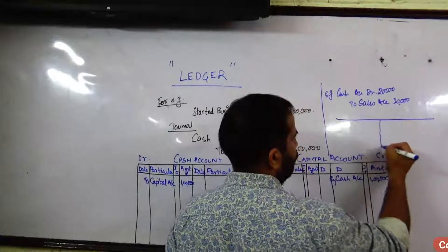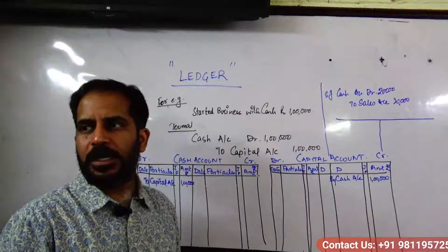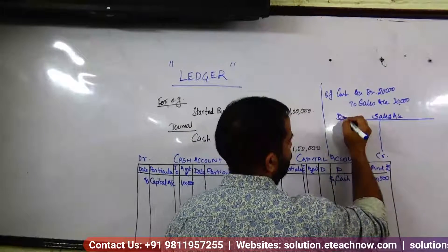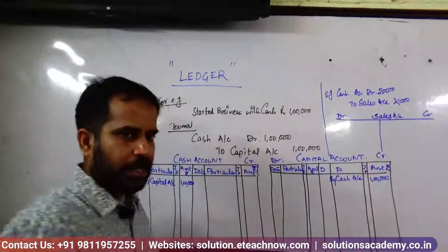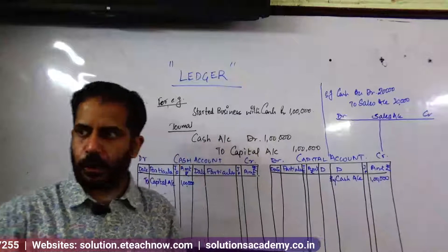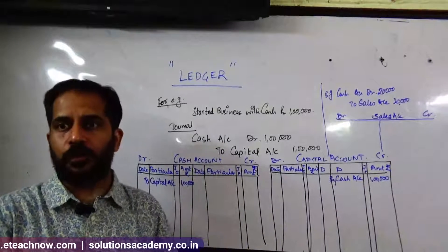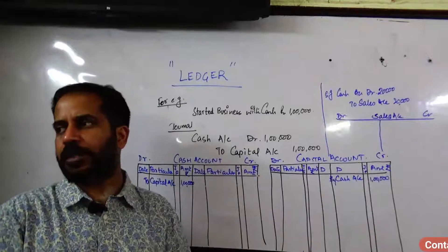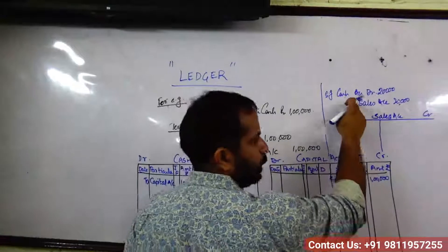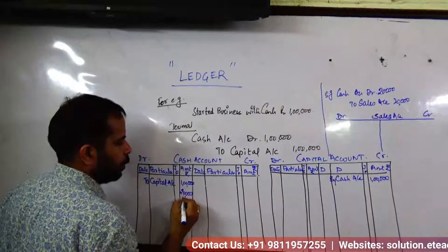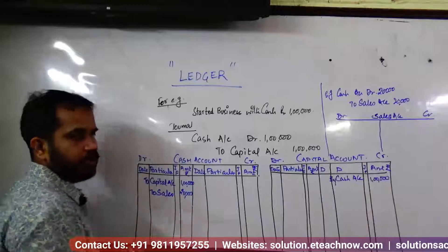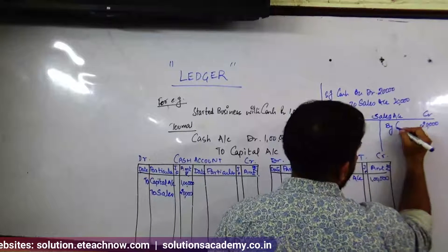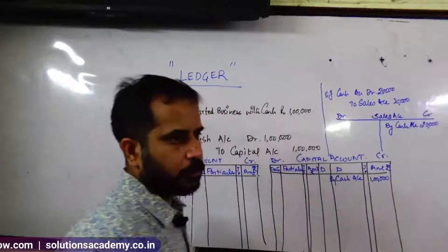For rough practice, you can make a T-shape account. For the first question you will do the proper format, but from the second question onwards you can use T-shape. In Cash account debit, you write 'To Sales' — 20,000. In Sales account credit, the name will be 'By Cash' — 20,000.